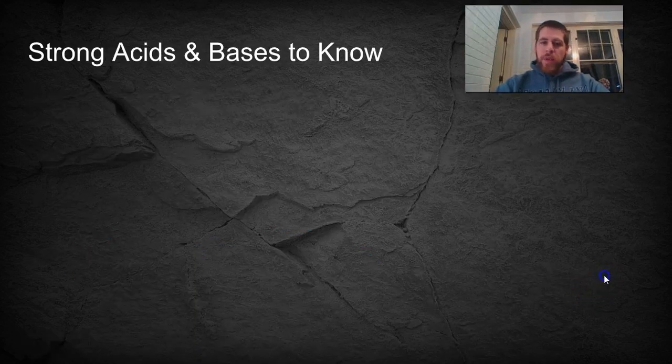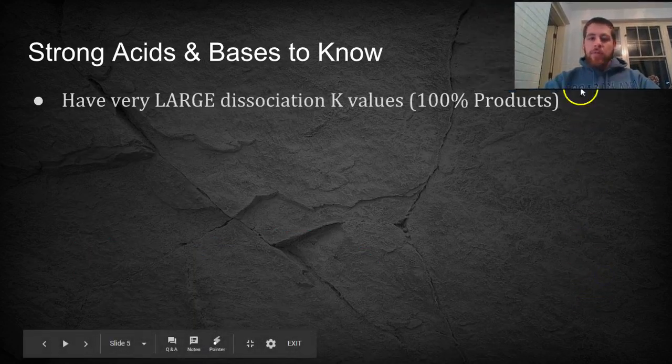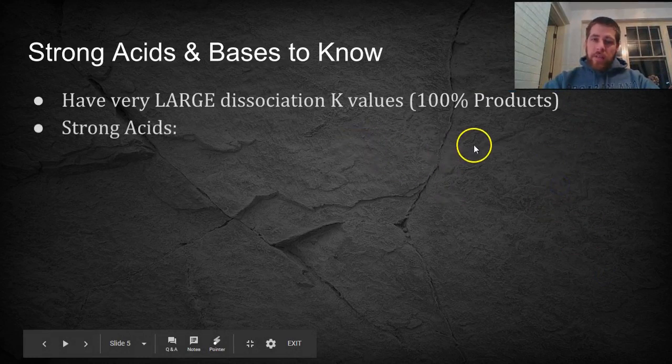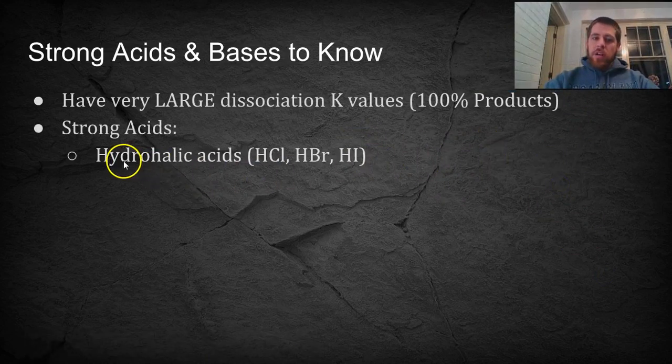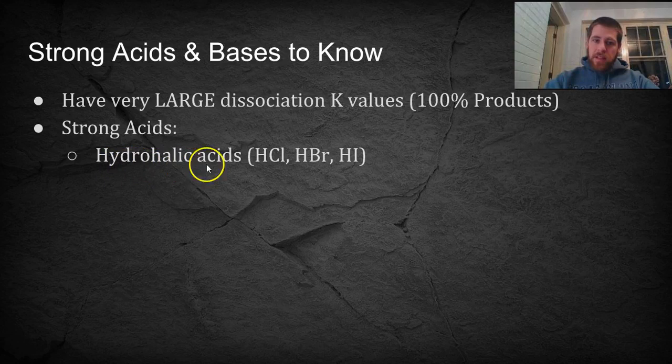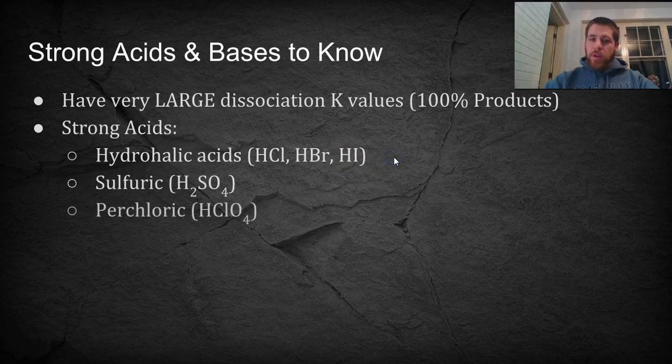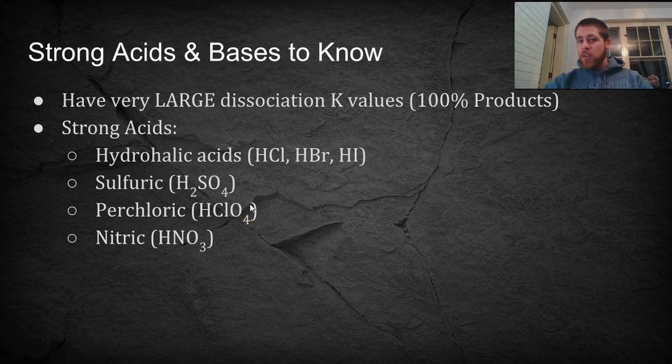There's a series of strong acids and bases that you kind of have to know. They're going to have really large dissociation K values. The strong acids are hydrohalic acids. So that's hydrochloric acid, hydrobromic acid, hydroiodic acid, sulfuric acid, perchloric acid, and nitric acid. These six acids are the only strong acids. Every other acid in the world, for our purposes at least, is going to be not strong.